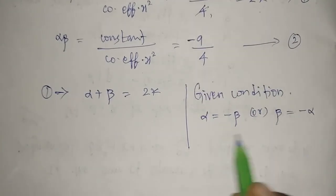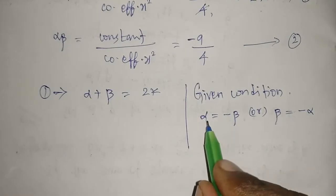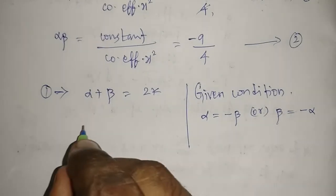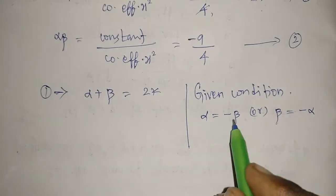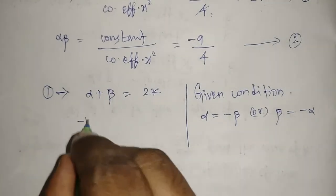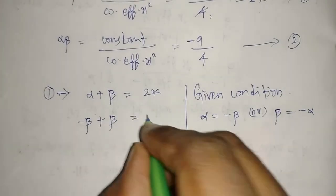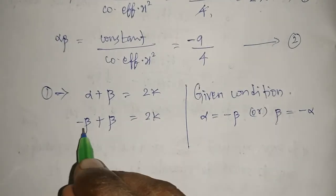I'm going to use the first one: alpha equal to minus beta. Instead of alpha, I'm going to substitute minus beta. So alpha equals minus beta is given. Now minus beta plus beta, I'm writing, which is equal to 2k.